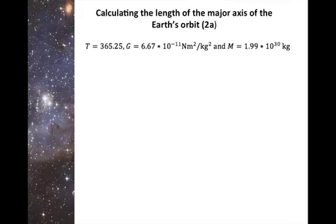We have the period of the Earth's orbit around the sun, which is equal to 365.25 days. We have a gravitational constant, which is equal to 6.67 times 10 to the negative 11 newton times m² over kg². And we also have the mass of the sun, which is equal to 1.99 times 10 to the 30 kilograms.